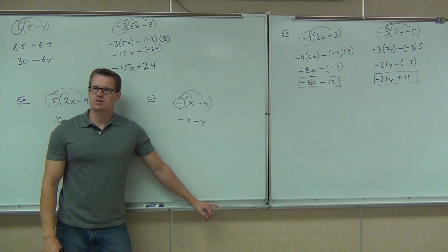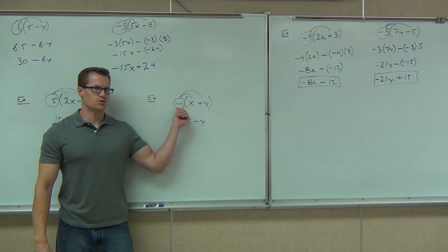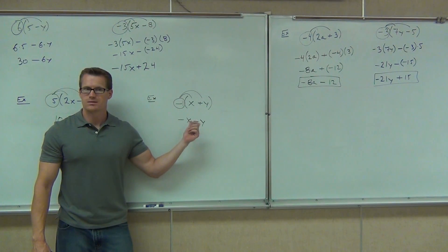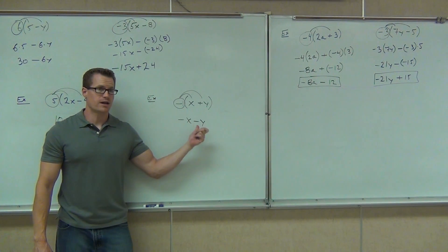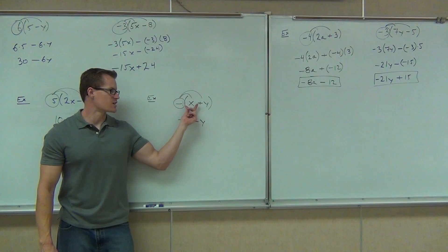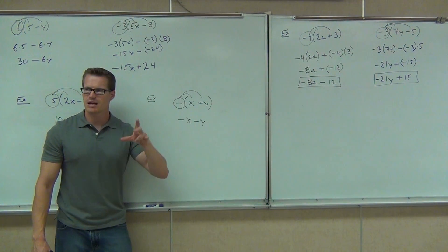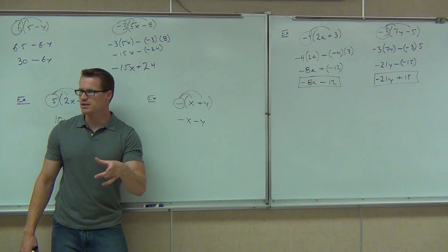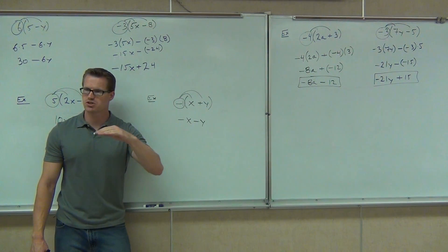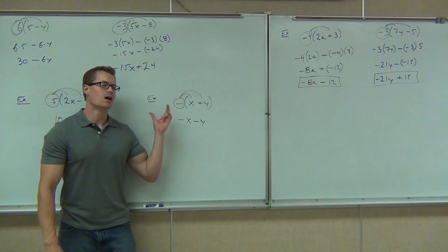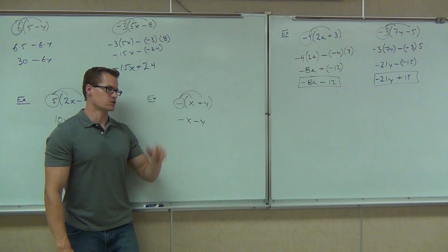So essentially, what does this negative do in front of your parentheses? Did it change the values? It didn't change the x and the y — it just changed the signs. Positive x became negative; plus y became minus y. A negative in front of your parentheses will simply change every sign inside your parentheses. So basically, this just changes the sign.